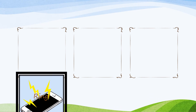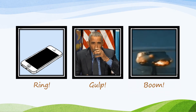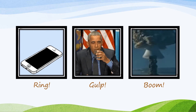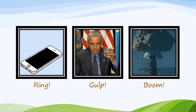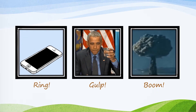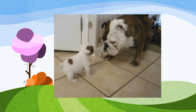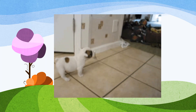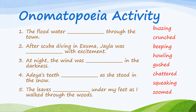Onomatopoeias allow for interesting sensory details — sound, specifically. While an onomatopoeia can stand on its own, such as ring, gulp, and boom, onomatopoeias can also be used in detailed sentences. Here's an example: Sarah barks at Johnny for leaving his dirty clothes all over the living room floor. Bark is used to express how frustrated Sarah is. It's time to practice. Take five minutes to fill in the blanks with the most appropriate use of an onomatopoeia. Pause the video to practice and press play when you're done.